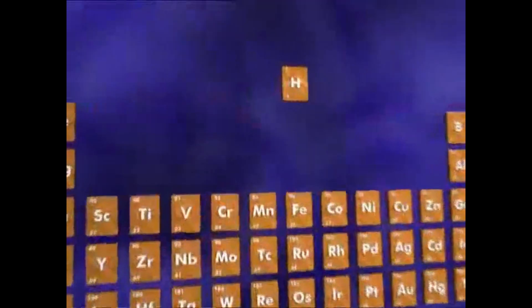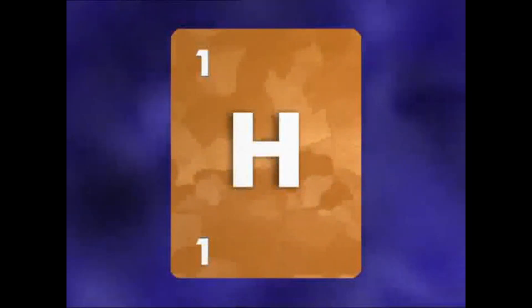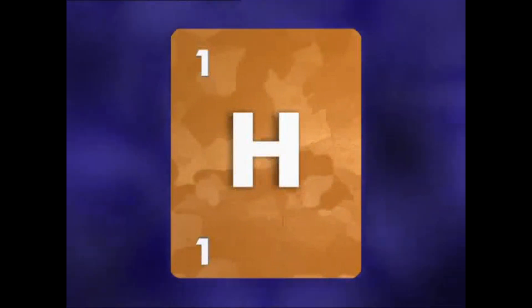To understand mass number, once again, we need to look inside an atom's nucleus. Mass number is the number of protons plus the number of neutrons. Hydrogen has just one proton in its nucleus and no neutrons. Its atomic number is one, and its mass number is also one.